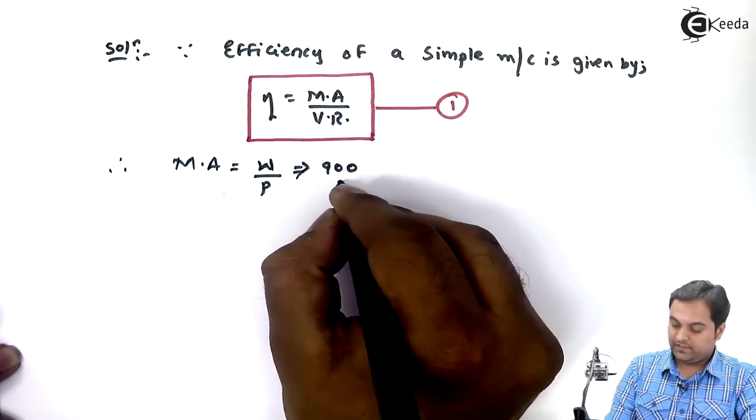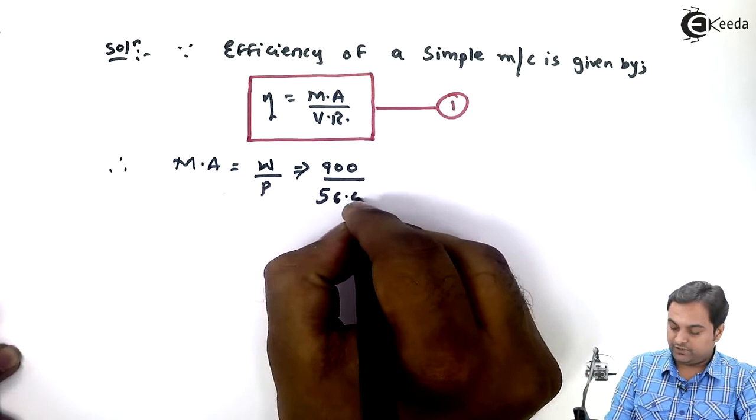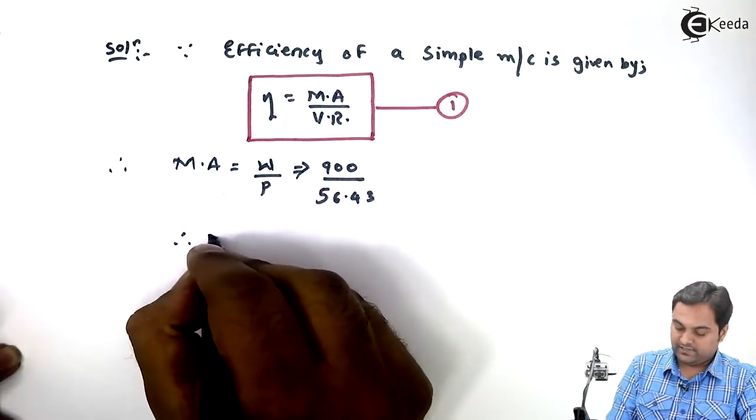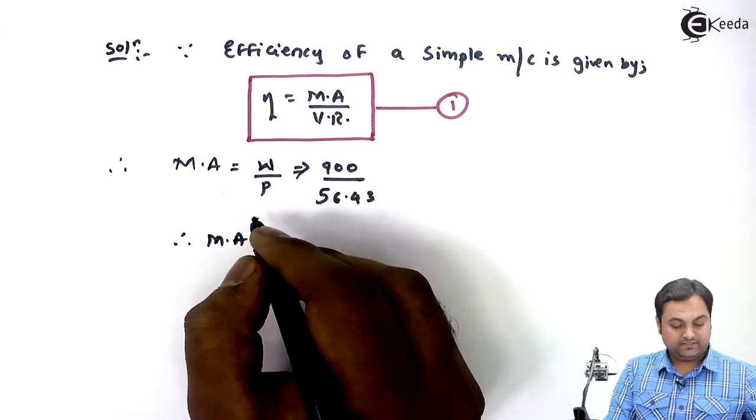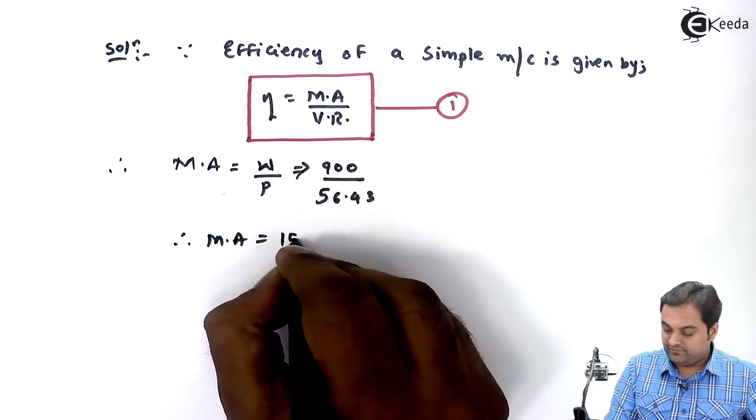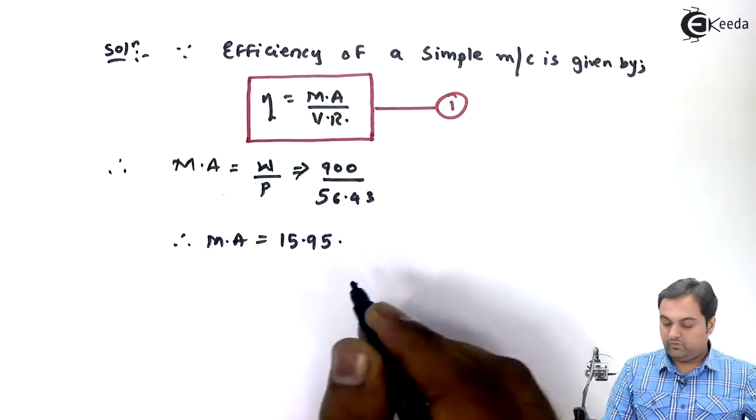So from this, MA value comes out to be 15.95. Now I know mechanical advantage and velocity ratio is given as 25.